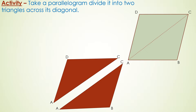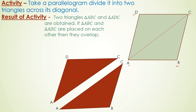We have taken a parallelogram ABCD which has been cut across its diagonal AC. If we take a parallelogram and cut it across its diagonal, then we obtain two triangles ABC and ACD. These two triangles overlap on each other — triangle ABC and triangle ADC — and if placed on each other, they will completely cover each other with no space left.